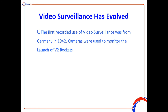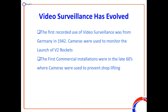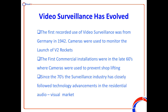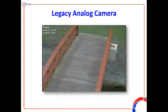A quick history of surveillance: CCTV technology was really introduced firstly back in the 1940s, originally for recording the launch of V2 rockets, and commercially got deployed back in the 60s, primarily to prevent and try to reduce the amount of shoplifting going on. Since the 70s really, the camera technology has not moved on a huge amount, but technology has evolved a lot since then, allowing us to do what we can do now.